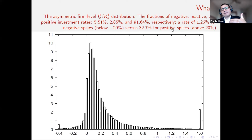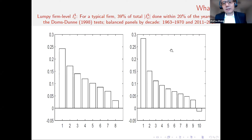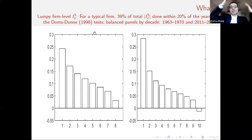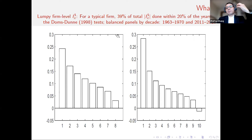Another indication is spikes — investment rates above 20%, representing big investment projects. Cooper and Haltiwanger report 18.6% at the plant level. We find a higher spike rate of 32.7%. Another prominent classic study is by Doms and Dunne. All investment theorists cite these two papers — Cooper and Haltiwanger and Doms and Dunne — for empirical motivation. Doms and Dunne work with a balanced panel from the Longitudinal Research Database. They rank each plant's investment in the time series in descending order and find that 50% of investment is done within just three years — three out of 16 years, or about 20% of their sample years.